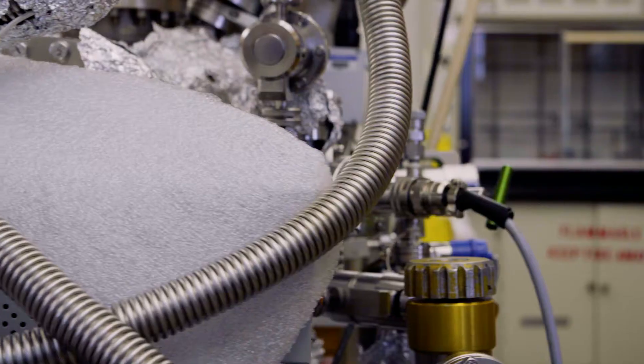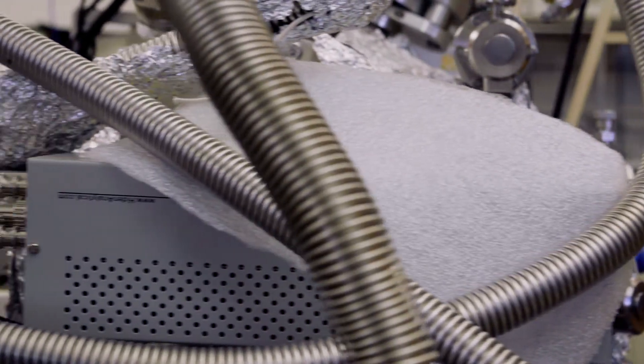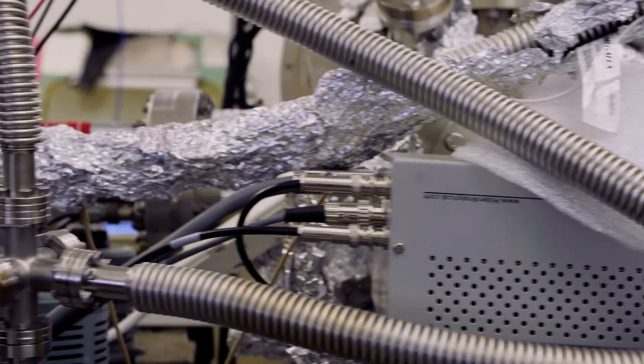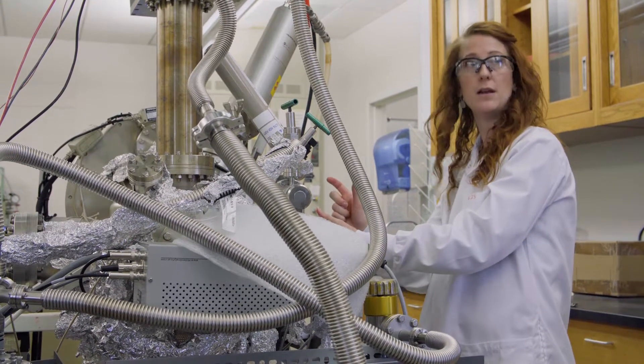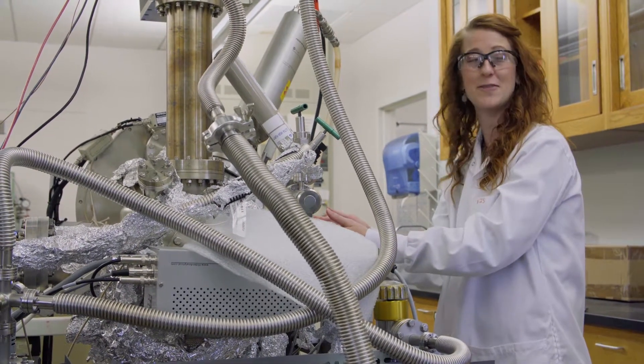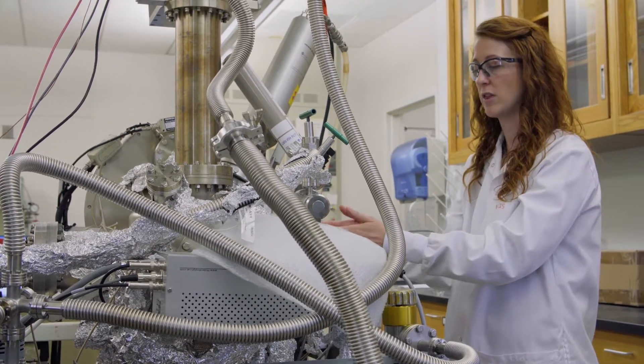This is a chamber where we've removed most of the molecules from the inside so that we can isolate specific molecules and look at them on a model catalyst surface. For example, if we wanted to study how carbon dioxide reacts, we would put it into this ultra-high vacuum chamber and let it land on a surface, then study how it breaks apart or reacts with other fragments on the surface.